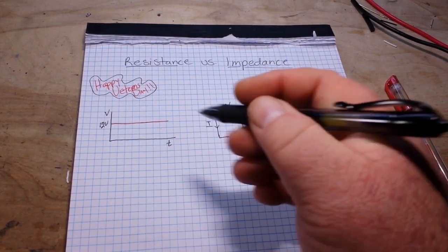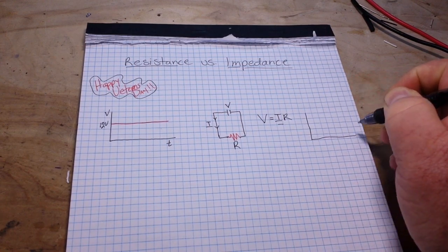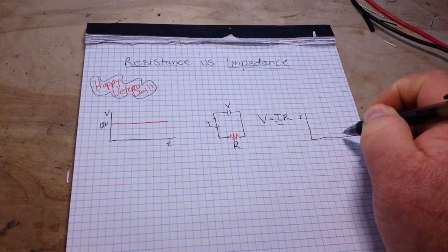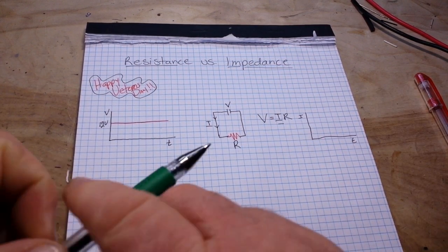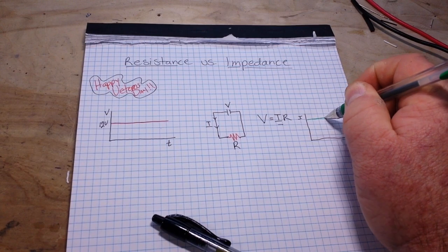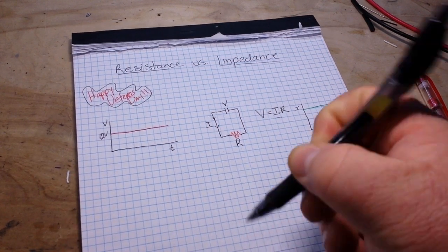So that's our resistance. And if we drew another graph here of current over time, our current would remain steady.